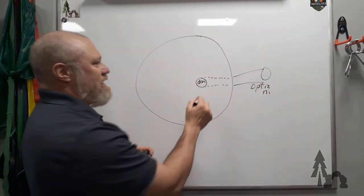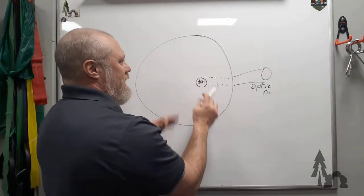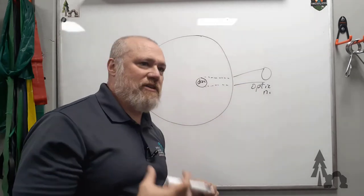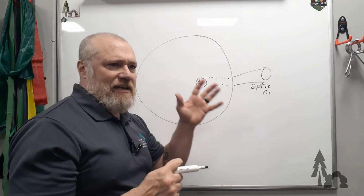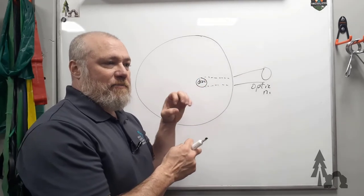So, the optic disc is where all of the axons from the rods and cones and the light-sensitive neurons, the ganglion cells and such, of the retina,